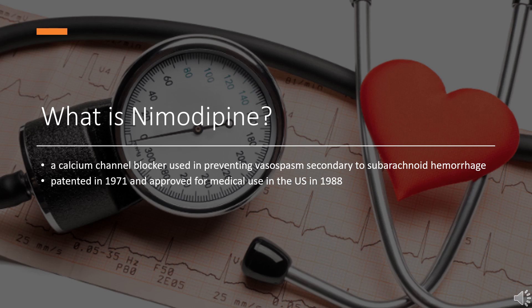Nimodipine, sold under the brand name Nimotop among others, is a calcium channel blocker used in preventing vasospasm secondary to subarachnoid hemorrhage. It was originally developed within the calcium channel blocker class and used for the treatment of high blood pressure, but is not used for this indication. It was patented in 1971 and approved for medical use in the US in 1988, and in Germany in 1985.